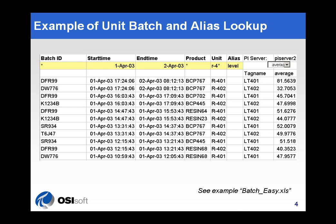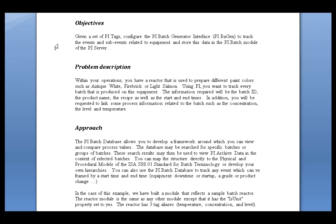So, if this is the goal, how do we get to that goal? Let's take a look at the exercise. Our objective is that we're going to build or configure the PI Batch Generator Interface — we know this as PIBGEN. We're going to configure that interface so that it automatically tracks events and sub-events related to some unit in the field, and it's going to store that in the PI Batch records on the PI Server so that later, in a subsequent exercise, we'll be able to use the PI Batch View add-ins to ProcessBook in Excel to go out and find those batches. We're going to be tracking Batch ID, Product Name, the Recipe, Start and End Times, as well as Concentration Level and Temperature through the Alias Mechanism.